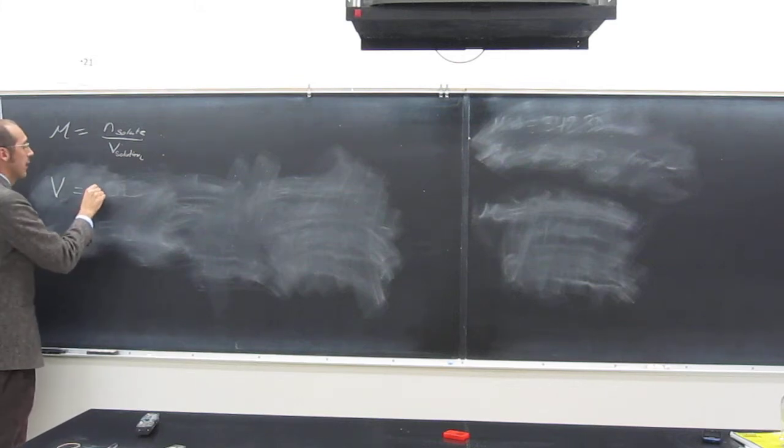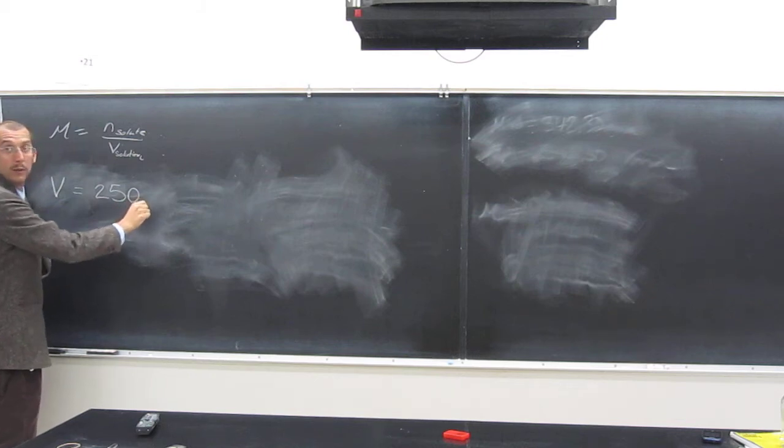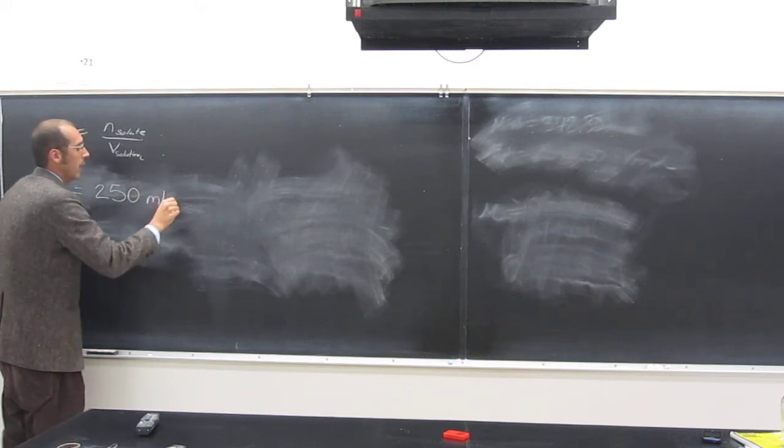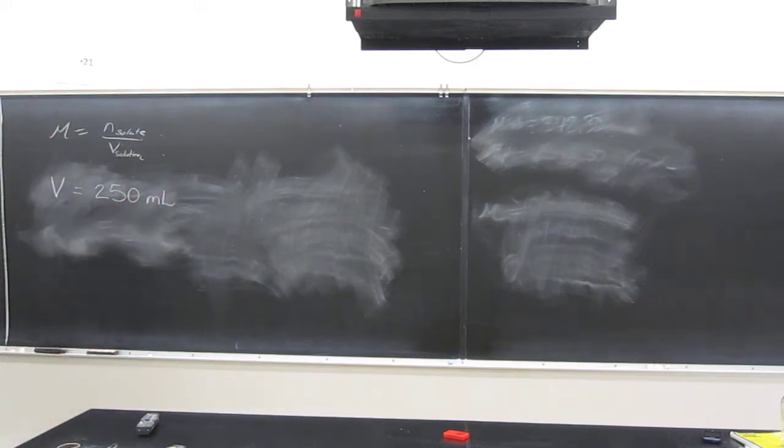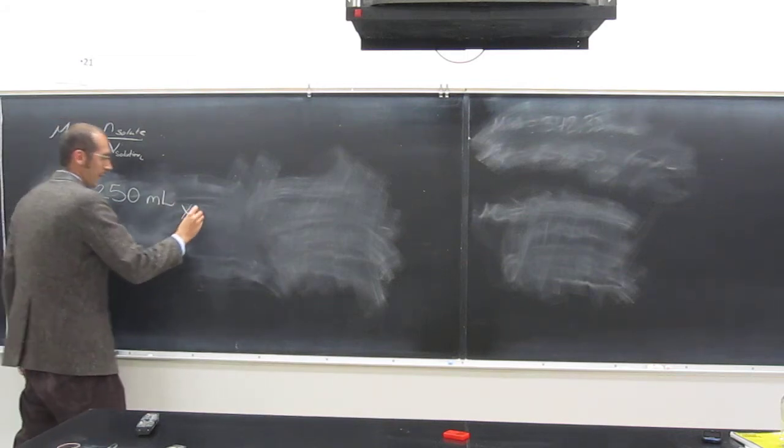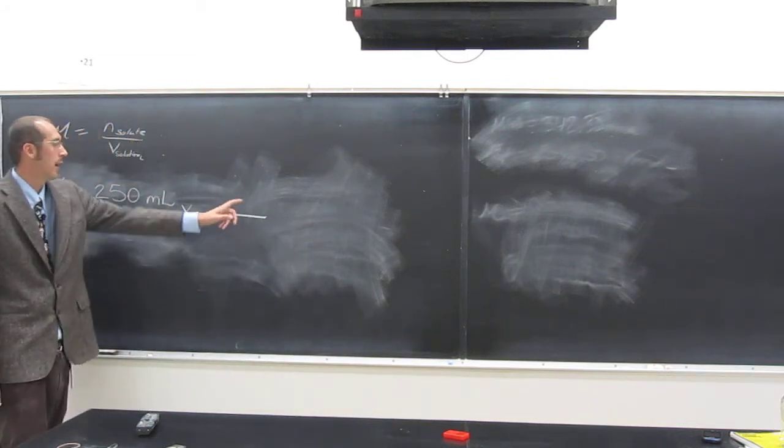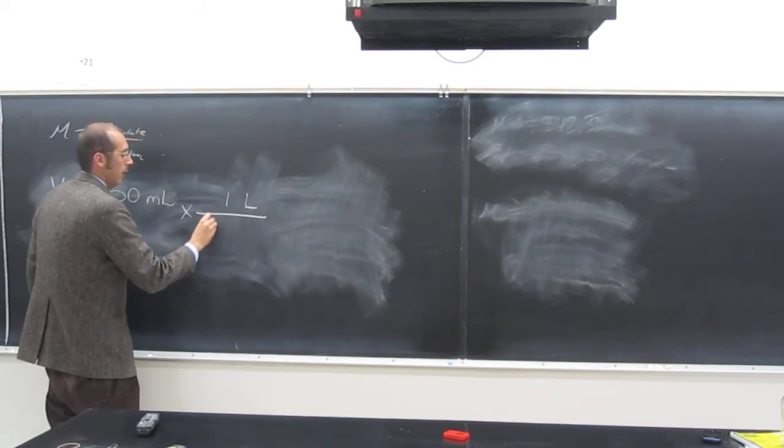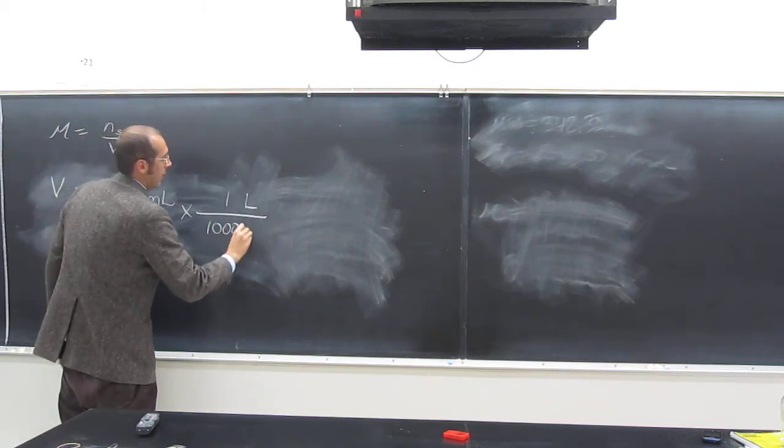What is the volume that's given to us? 250, right? But there's no decimal point there, so we've got to watch our sig figs. And it's in milliliters. So let's convert that to liters. How do we do that? Multiply by what? What's on top here? One liter. And what's on bottom? 1,000 milliliters, right?